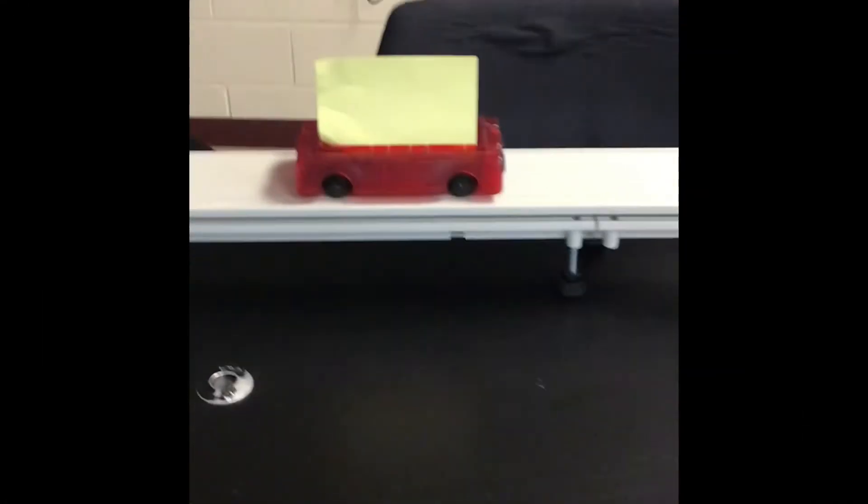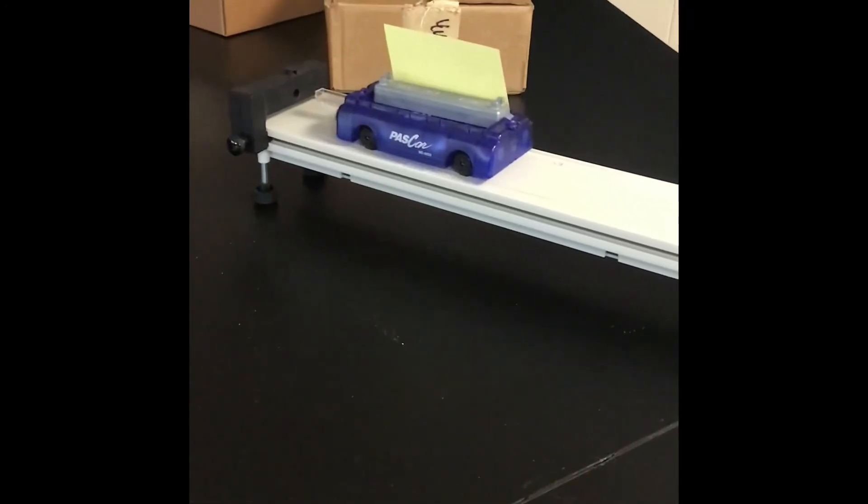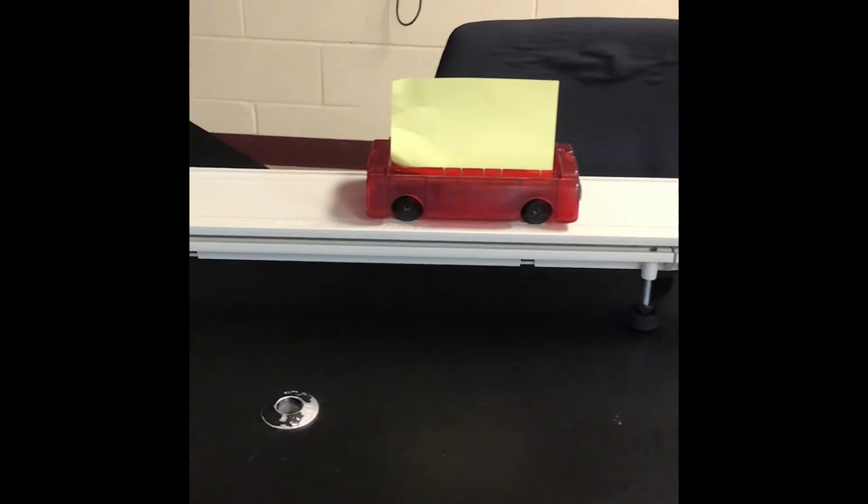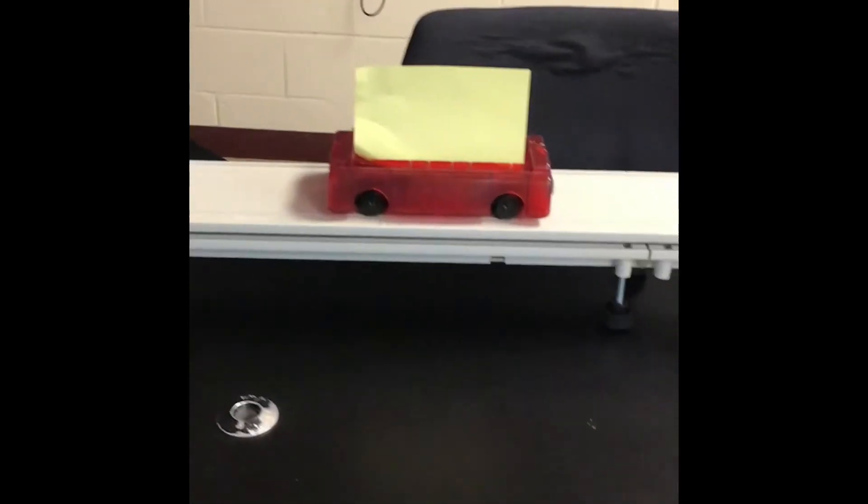Last collision, we're going to look at an elastic collision, where these carts will collide and bounce apart. So I'm going to start by giving the more massive blue cart an initial velocity. It's going to collide and come to rest. And then the red cart is going to move to the right with some velocity.